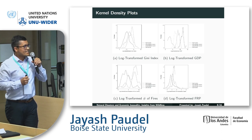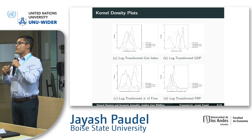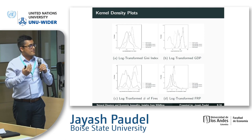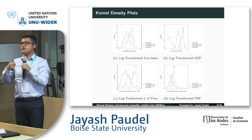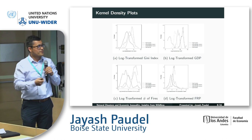I start the analysis with some basic descriptive graphs. You can see kernel density plots on Gini index, GDP per capita, number of fires, and fire radiative power across countries of different types — broken down by high income, upper middle income, lower middle income, and low income categories. As we'd expect, there's massive economic inequality in countries that do not belong to high income categories. The number of fire events is also heterogeneous; on average, more fires tend to happen in countries that do not belong to the high income category.